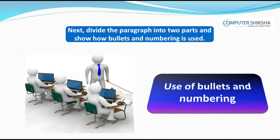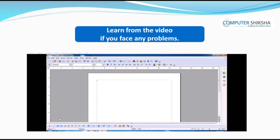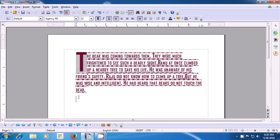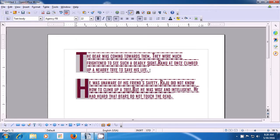Next, divide the paragraph into two parts and show how bullets and numbering is used. Learn from the video if you face any problems. With this video, we will practice the use of bullets and numbering. To apply bullets and numbering, we will first divide this paragraph into two parts so that in one part we can apply bullets and in the other we can apply numbering. Bring your cursor to somewhere in the middle of this paragraph at the end of a line as is being shown in the video and press the enter key.